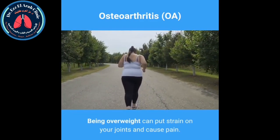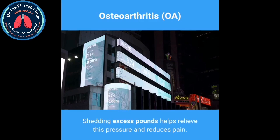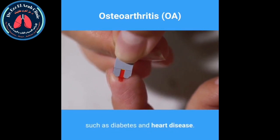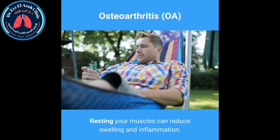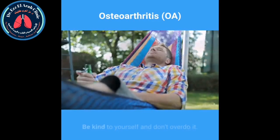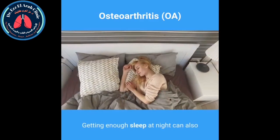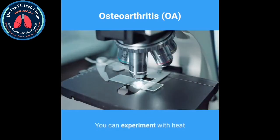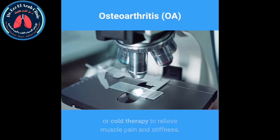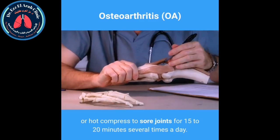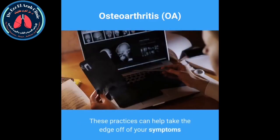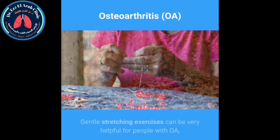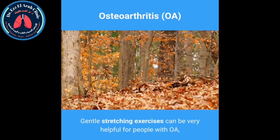Tai chi and yoga can also improve joint flexibility and help with pain management. Weight loss is another key lifestyle change — being overweight puts strain on your joints and causes pain. Shedding excess pounds helps relieve pressure and reduces pain, and can also lower your risk of diabetes and heart disease. Adequate sleep is important as well; resting your muscles can reduce swelling and inflammation. Heat and cold therapy can also help — apply a cold or hot compress to sore joints for 15 to 20 minutes several times a day.